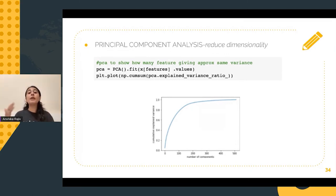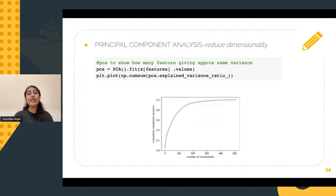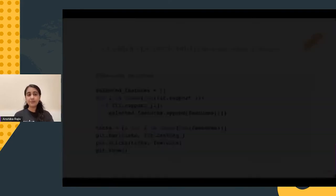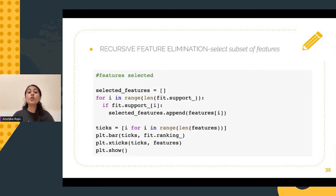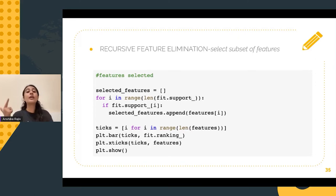Thus, we can reduce the dimensionality of the data set to 150 by projecting it onto the hyperplane defined by the first 150 principal components. Next, we perform feature selection using recursive feature elimination. In RFE, a backward selection of features is implemented based on two attributes: the coefficient and the feature importance.